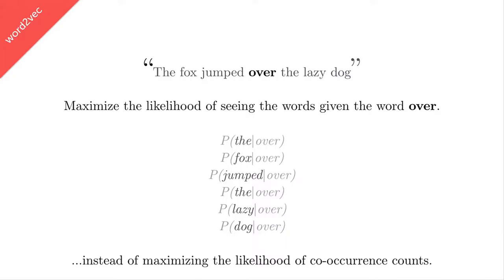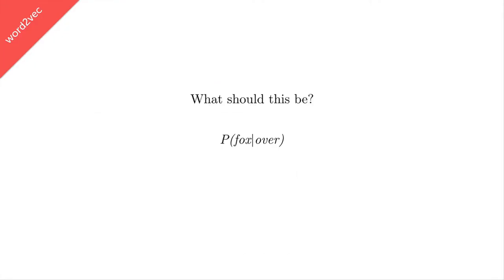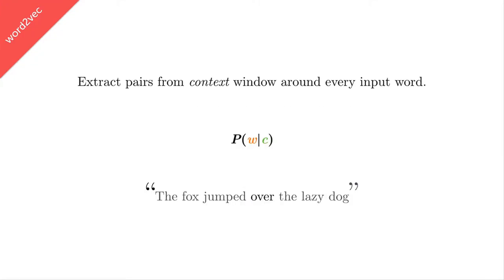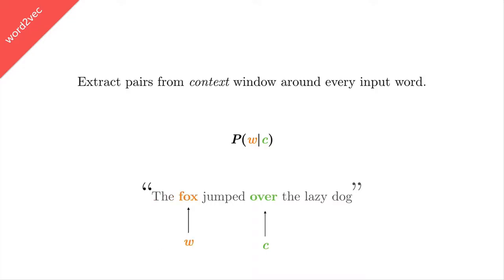This is a pretty simple assumption. This isn't some recurrence relation — there's no state. It's a bag-of-words model, and all those words could be shuffled around in order and it still wouldn't affect how Word2Vec is trained. So what should the kernel — what should 'fox given over' actually be? We're going to randomly initialize word vectors and try to maximize that likelihood. We extract pairs of context and target word vectors from a little window. We might have 'over' as our context word, and then 'the given over,' 'fox given over,' 'jumped given over,' 'lazy given over,' and 'dog given over.' This is the innermost for loop inside of Word2Vec.